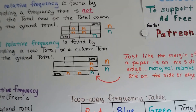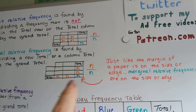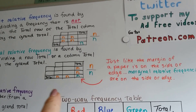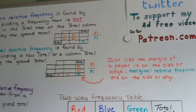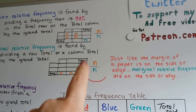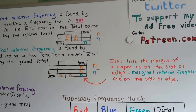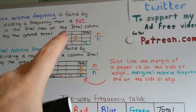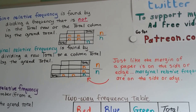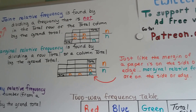Think of it this way: you know how the margin of your paper is along the edge or the side of your paper? Well, marginal relative frequencies are along the side or edge. So you can remember that's where the marginal ones are, and the joint ones are on the inside. Both are divided by the grand total.